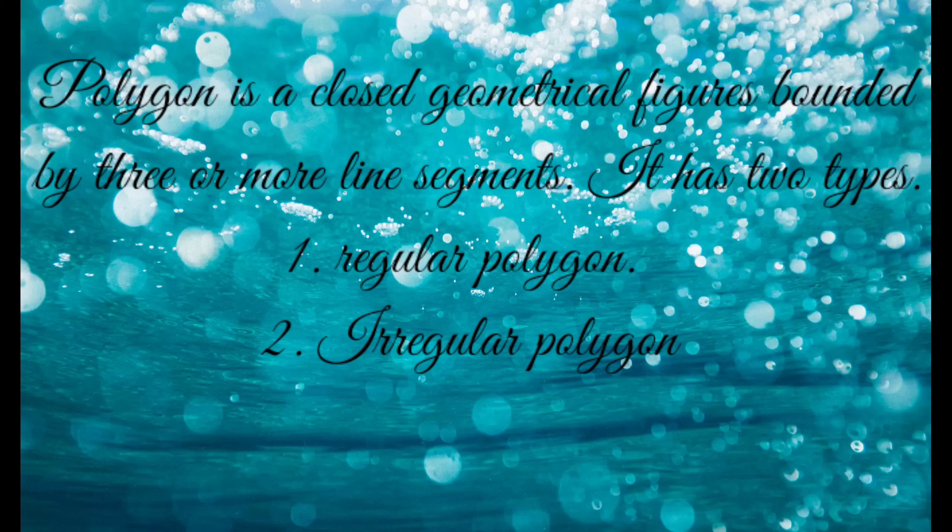There are two types of polygons. The first one is regular polygons. The second one is irregular polygons.